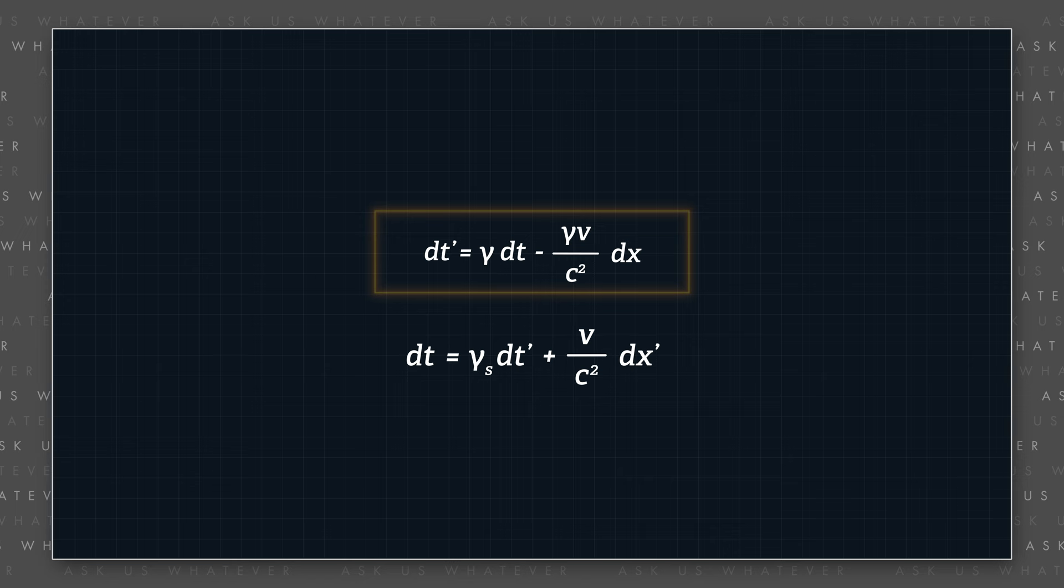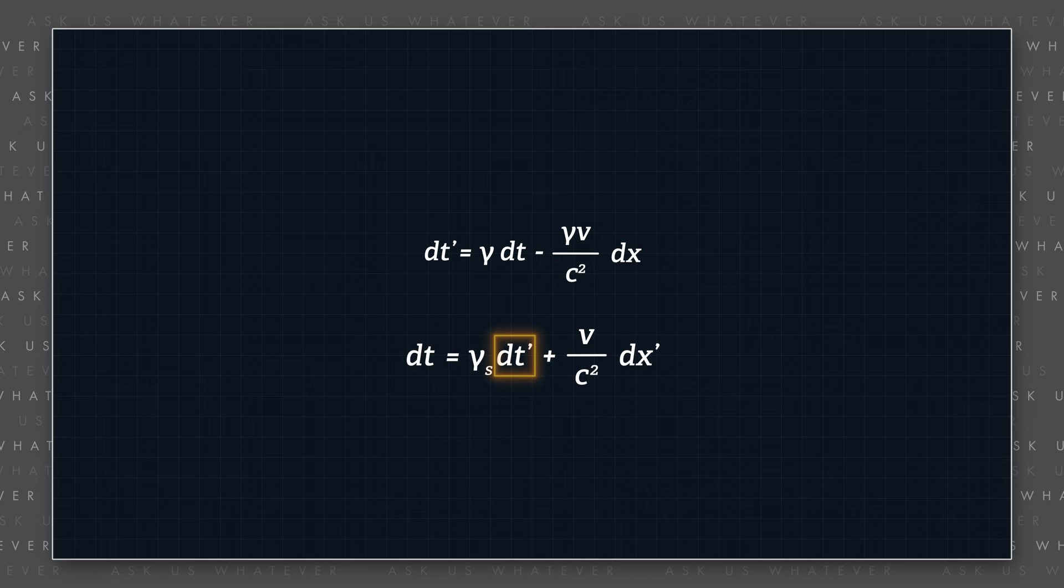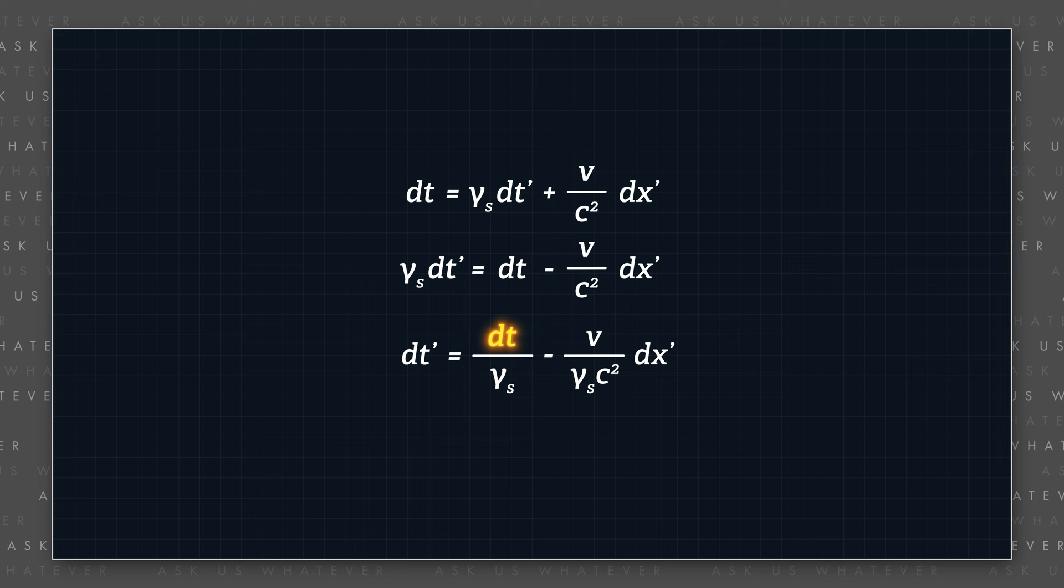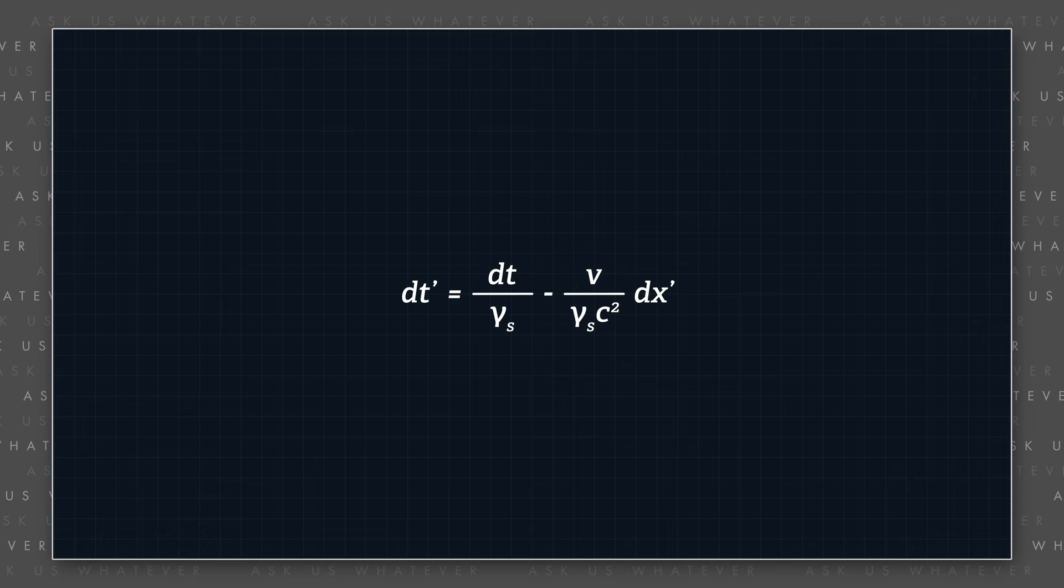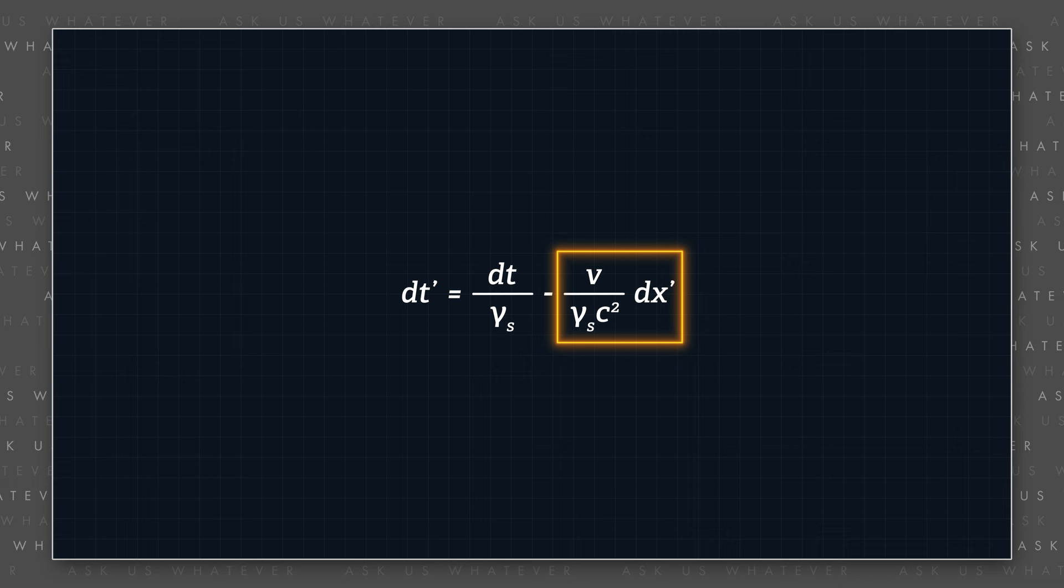Let's rewrite the DT prime transformation by rearranging the DT transformation to solve for DT prime. A couple of algebraic steps shows us that DT prime can be set equal to DT divided by gamma S minus V times DX prime divided by gamma S times C squared. In other words, time in the S prime frame DT prime is equal to time in the S frame DT divided by the time dilation factor gamma S as further adjusted for the effects of the Einstein synchronization protocol on the clocks in the S prime frame. That adjustment is equal to the speed of the S prime frame V relative to the universal preferred frame times the physical separation of any two given clocks in the S prime frame DX prime divided by gamma S times C squared.